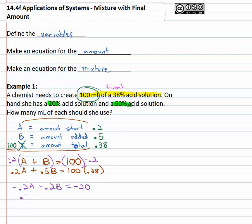we get negative point two A minus point two B equals a hundred times negative point two is negative twenty. The second equation is still the same, point two A plus point five B equals a hundred times point thirty eight, which is thirty eight.